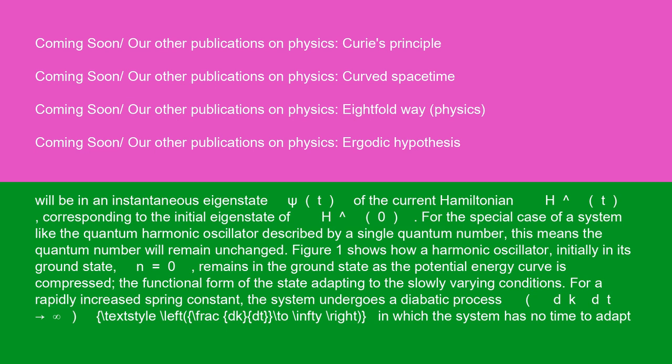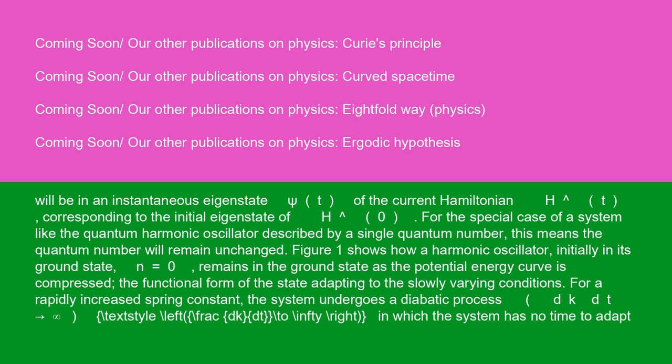For a rapidly increased spring constant, the system undergoes a diabatic process (dk/dt → infinity), in which the system has no time to adapt its functional form to the changing conditions. While the final state must look identical to the initial state — |psi(t)|² equals |psi(0)|² — for a process occurring over a vanishing time period, there is no eigenstate of the new Hamiltonian H-hat(t) that resembles the initial state. The final state is composed of a linear superposition of many different eigenstates of H-hat(t), which sum to reproduce the form of the initial state.